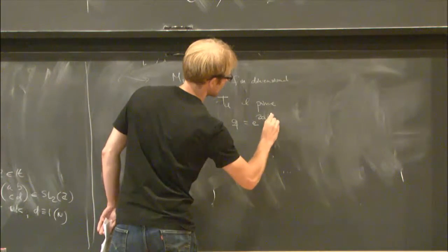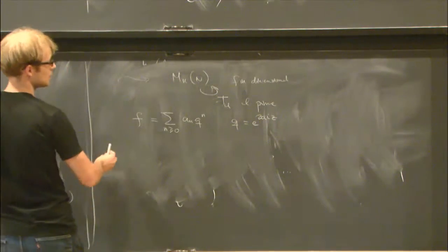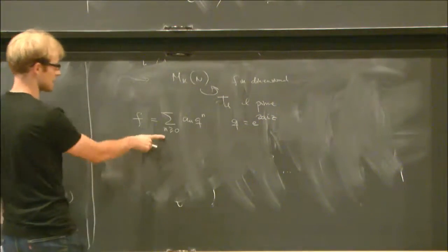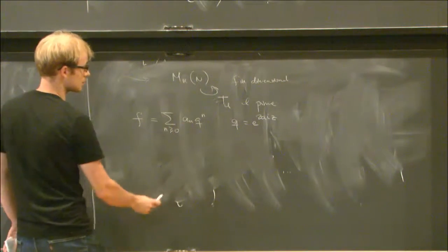q here is e to the 2πiz, which thanks to the growth condition, doesn't have any negative powers of q.